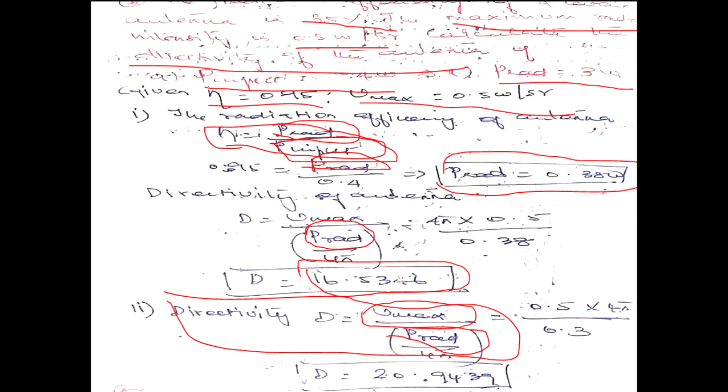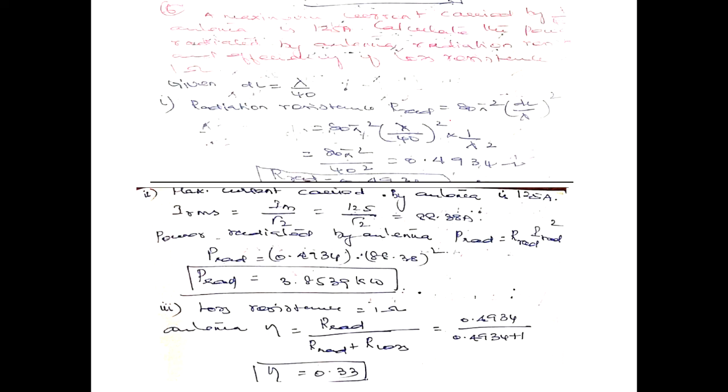For the next case, P_radiation is directly given as 3 watt. By substituting P_radiation equal to 0.3 into the formula, you get the directivity for the second case, which is equal to 20.9439.